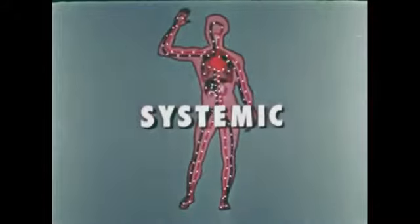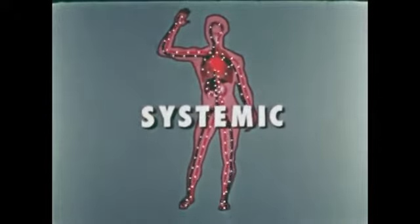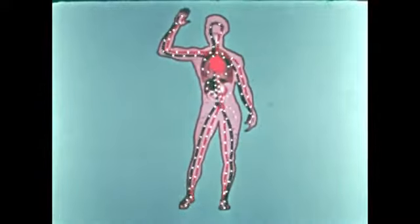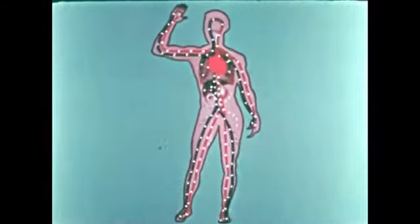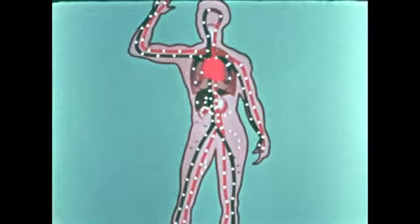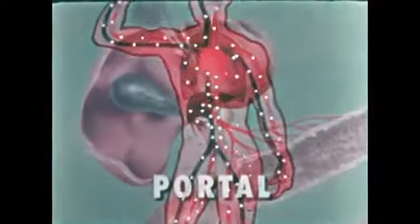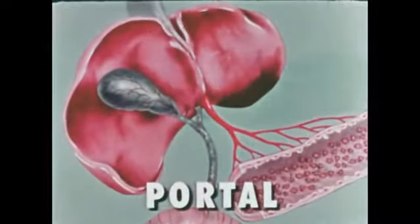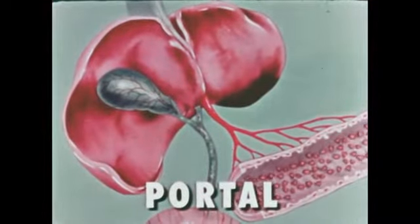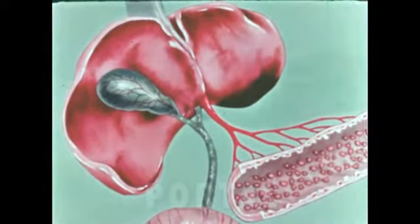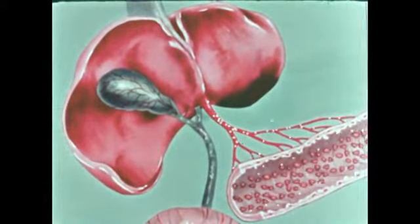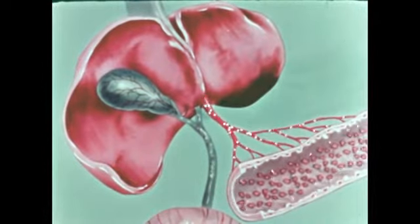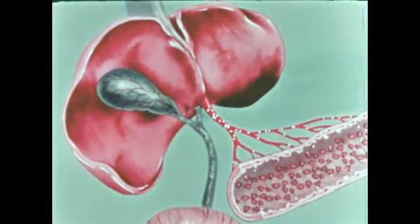The blood then returns to the heart to be pumped out to the body through the systemic circulation. Blood in the systemic part carries oxygen and other elements to all the cells of the body and removes waste. Food elements are introduced in a part of the systemic circulation called the portal circulation. These food elements are chemical products resulting from digestion, and are carried by the blood to the liver for storage and further chemical change.